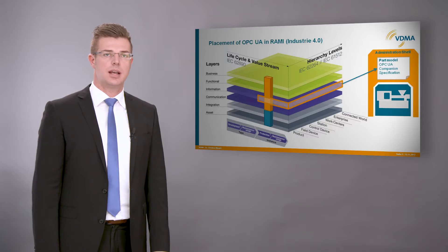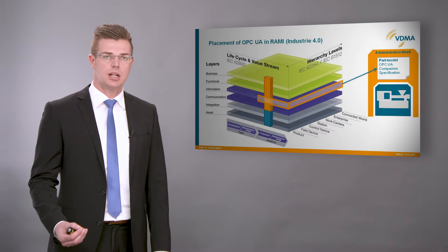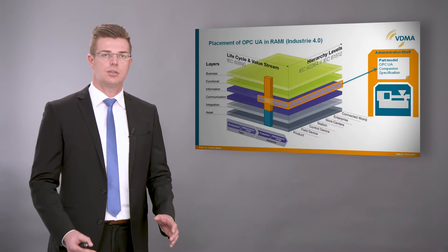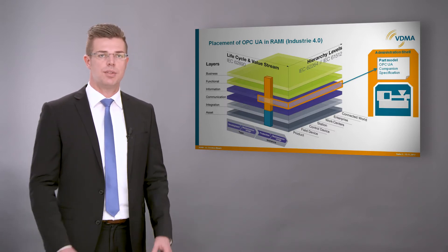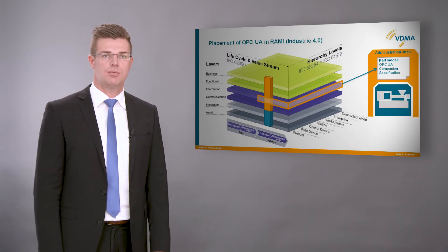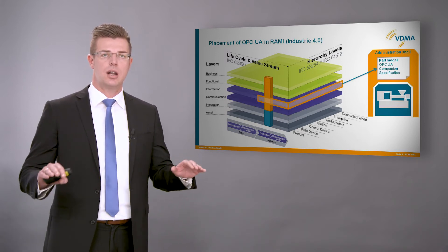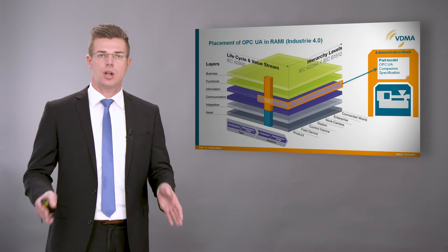In the VDMA we see the OPC UA companion specifications as an active part of Industry 4.0. We see it as a part model of the administration shell of the Industry 4.0 component, and we see it as part of the reference architecture model Industry 4.0 on the information level for the production and the product usage.